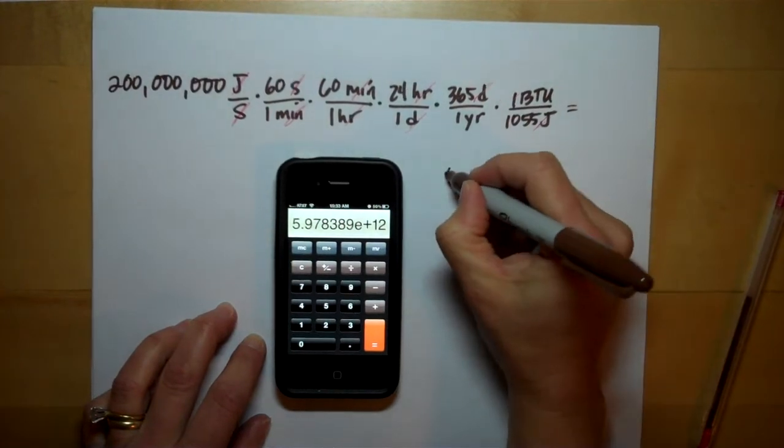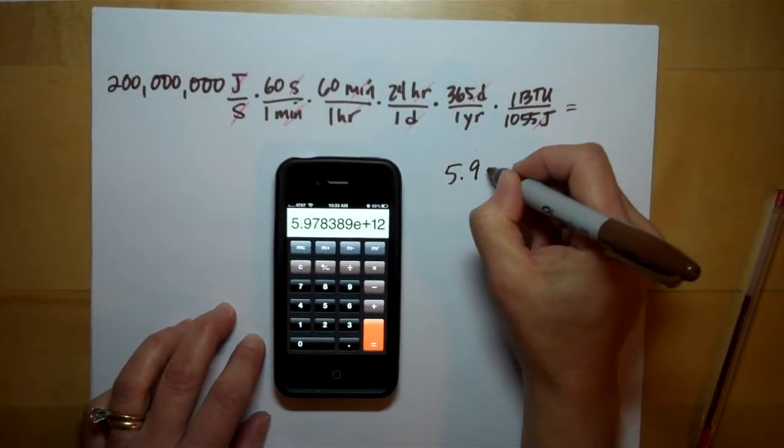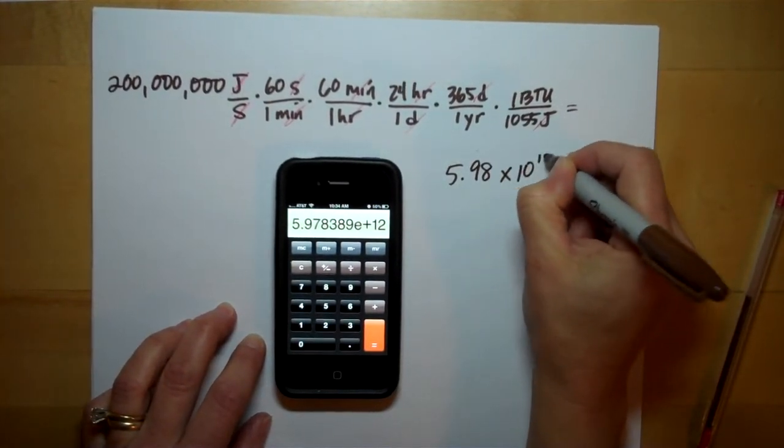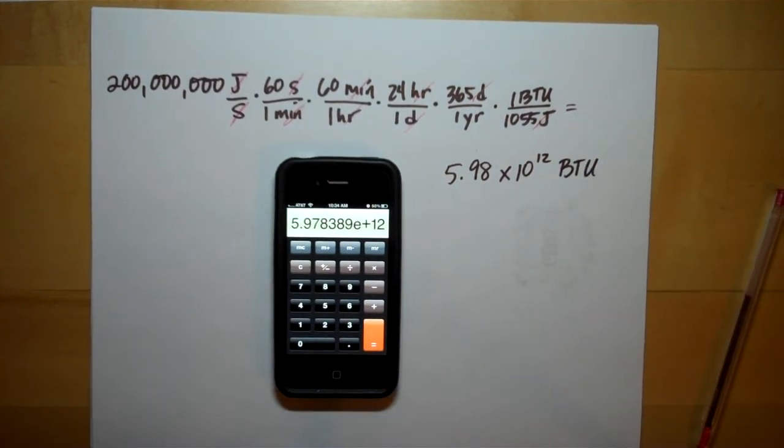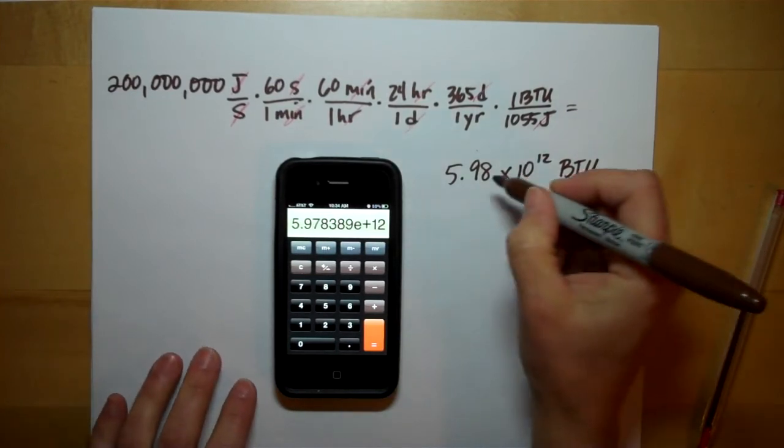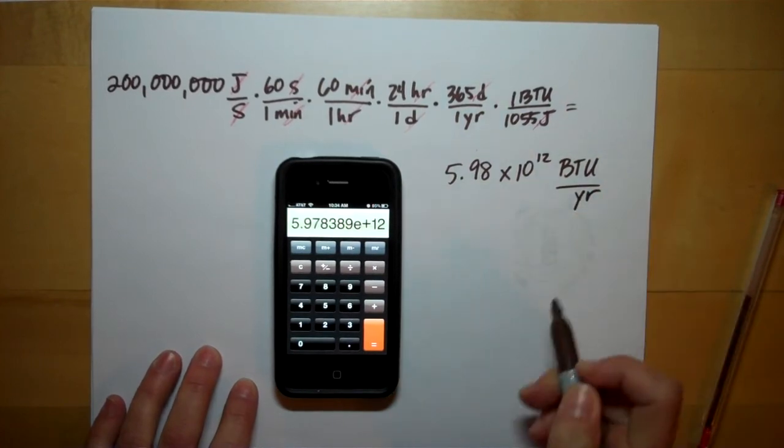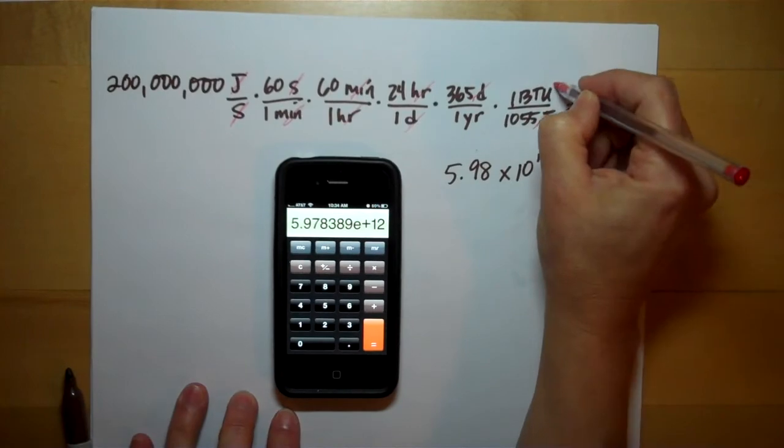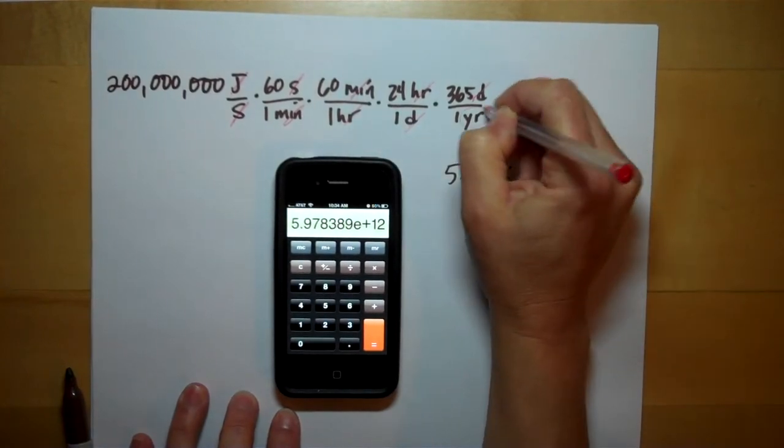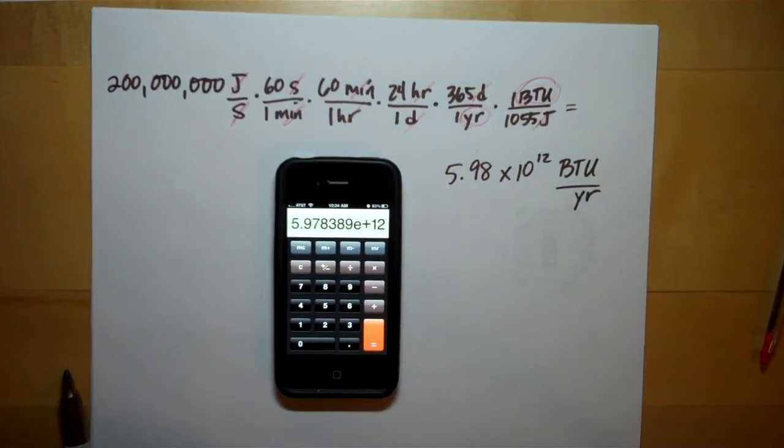This comes out to 5.98 times 10 to the 12th BTUs per year, because it's an annual question. How many tons of wood could be produced each year? So that many BTUs of energy are produced per year. See where our final units come from? BTUs per year.